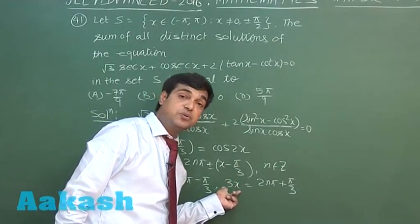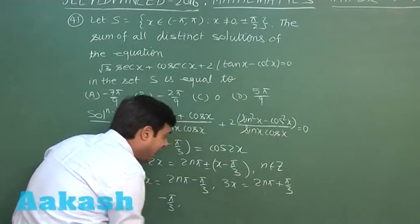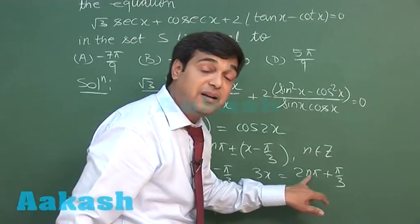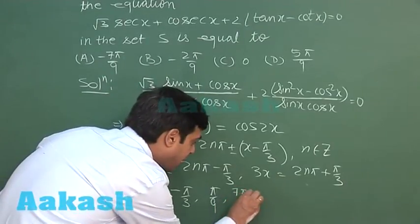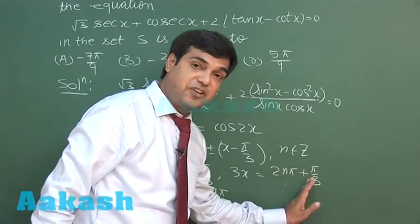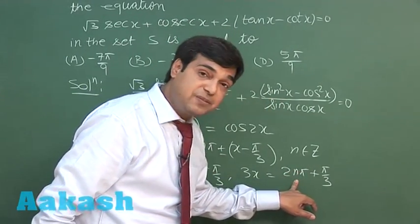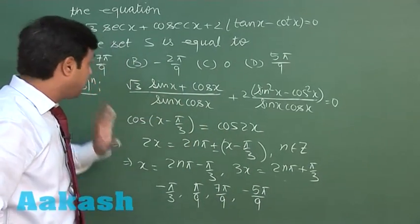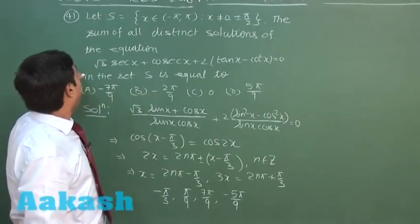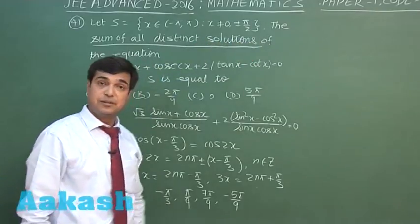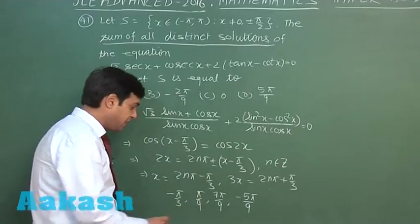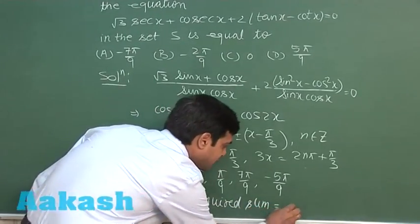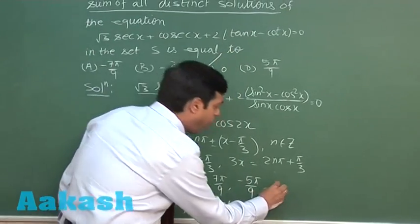Taking the negative sign: 3x = 2nπ + π/3. Since x ∈ (−π, π), 3x ∈ (−3π, 3π). Substituting n = 0: x = π/9. Substituting n = 1: x = (2π + π/3)/3 = 7π/9. Substituting n = −1: x = (−2π + π/3)/3 = −5π/9. n = 2 exceeds the interval. So the four solutions are −π/3, π/9, 7π/9, and −5π/9. Their sum equals 0, so option C is correct.